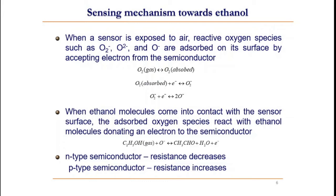This results in the depletion of electrons in the semiconductor surface. When ethanol molecules come into contact with the sensor surface, the absorbed oxygen species interact with the ethanol molecules, donating the electron back to the semiconductor. This decreases the resistance of the semiconductor.